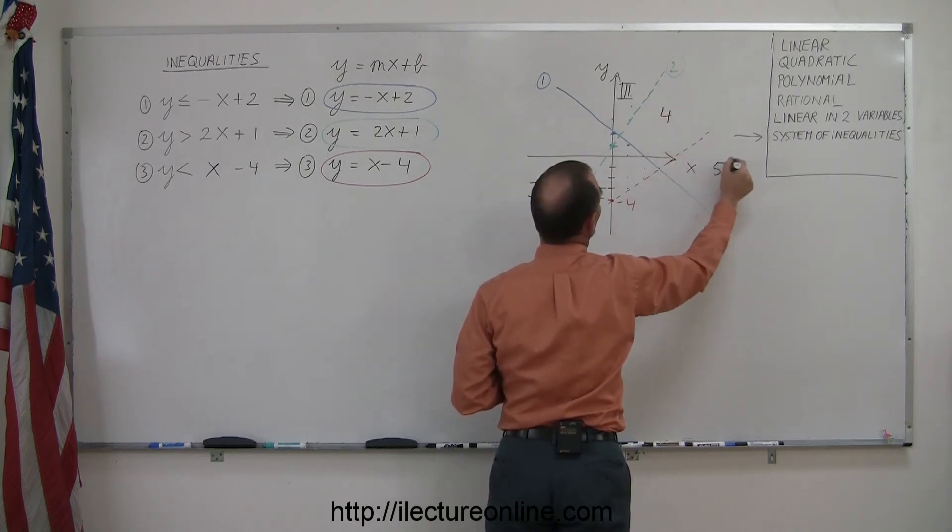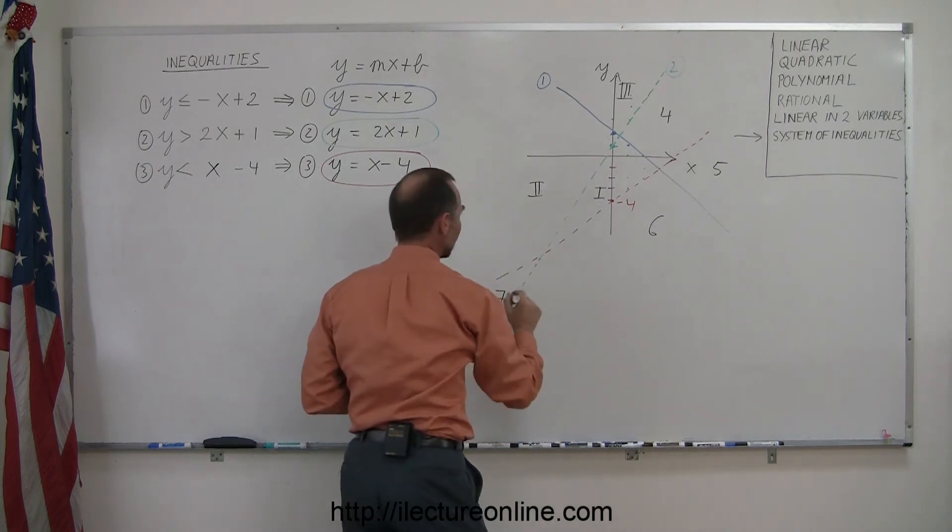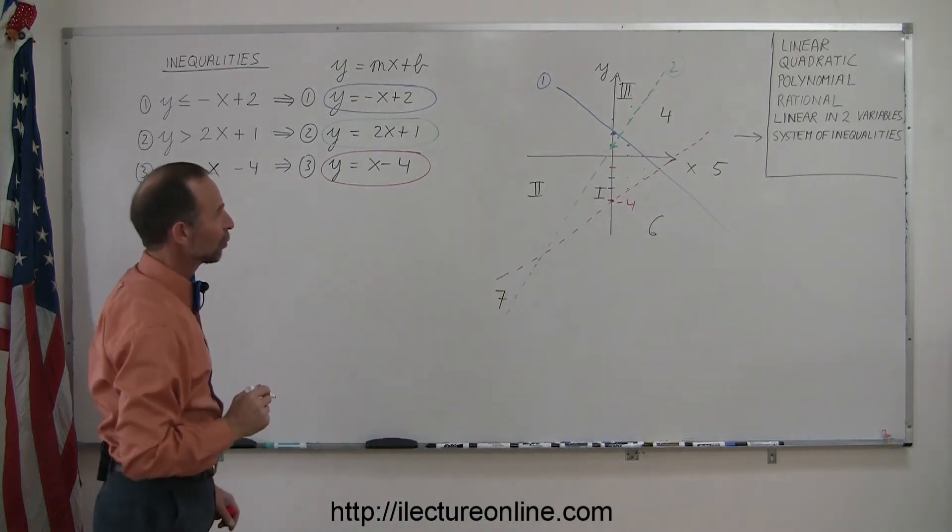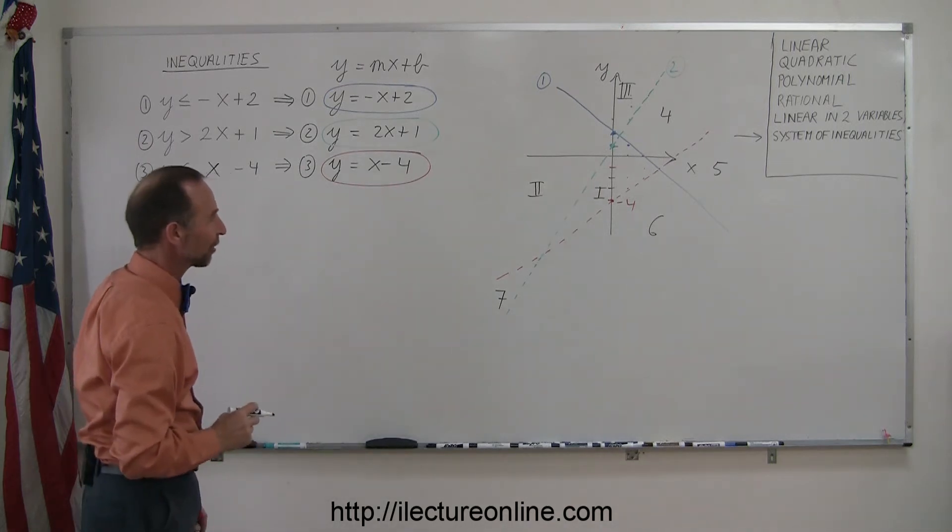There is region 5. Here is region 6. And there is region 7. I guess I went from Roman numerals to normal numbers, but please, that way you can see the various regions.